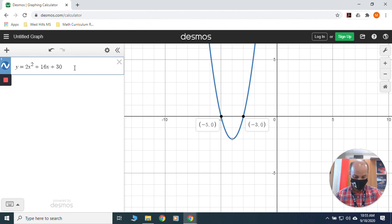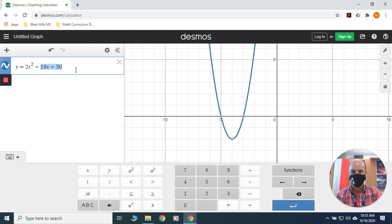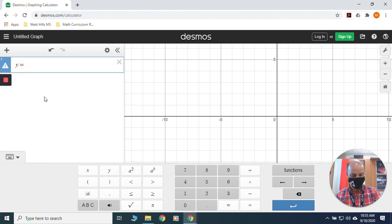You can change your equation to whatever you need it to be. Sometimes your x-intercepts are not as nice. I'm going to put in a different equation here. Just rewrite over my old one. I'm going to have negative x squared minus 8x minus 14.